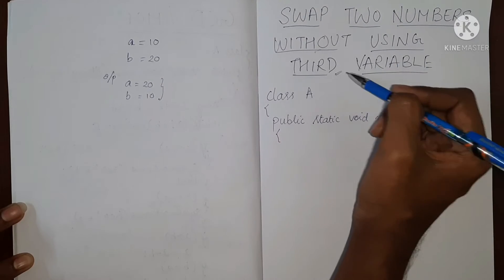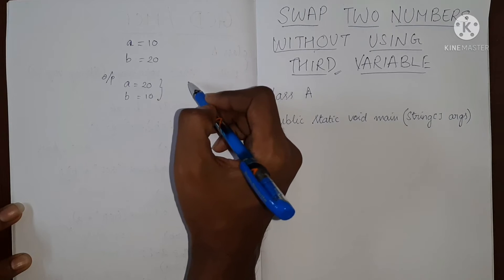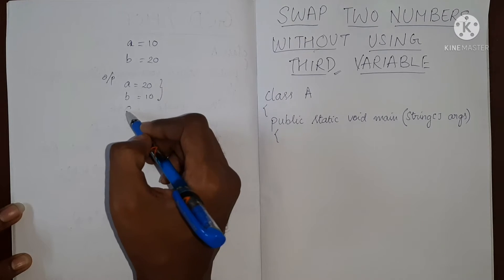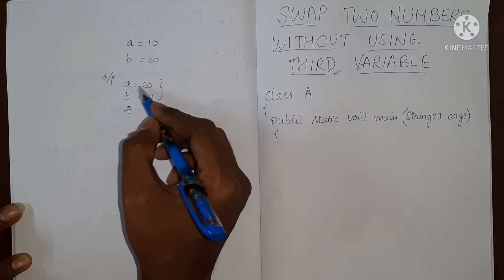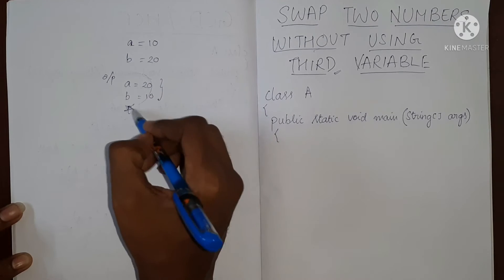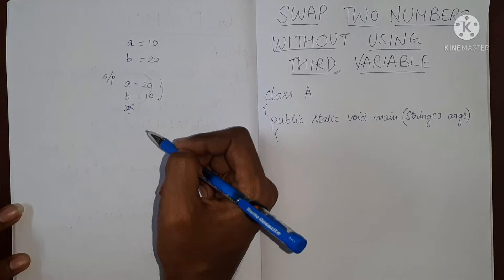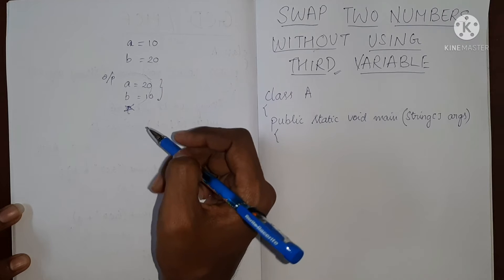But without using a third variable. If you've seen my previous video, I had used one more extra variable to swap these two numbers. So let's now do this without using a third variable. First I'll tell you how to do it and then I will explain the logic behind how it works.